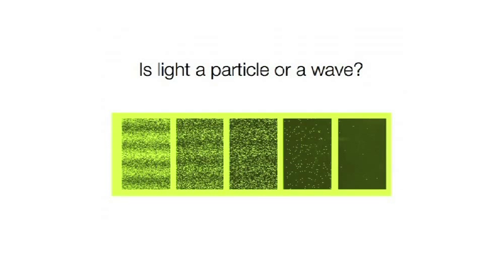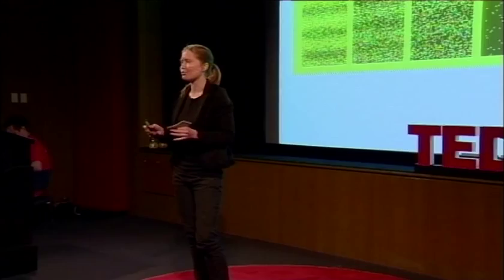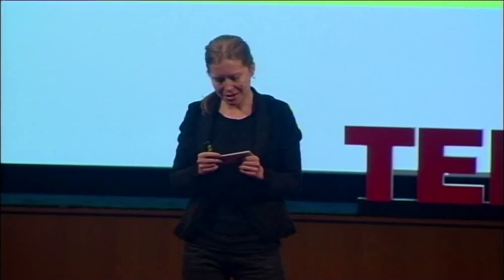This is the weird thing, because there's only one — so how can waves be interfering with each other? It's actually as if the light, one single particle, is interfering with itself. It's kind of trippy. So we then actually realise that the answer to the question — is light a particle or a wave — is yes it is.